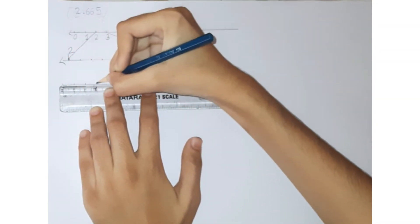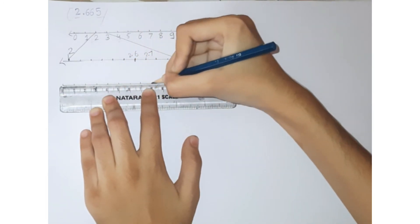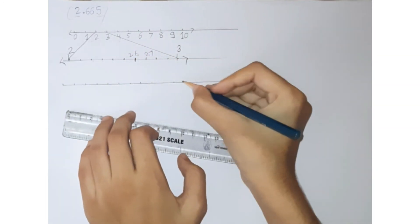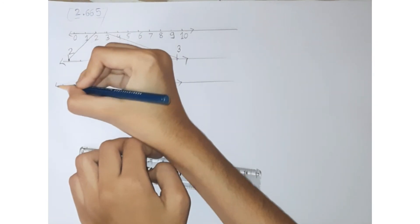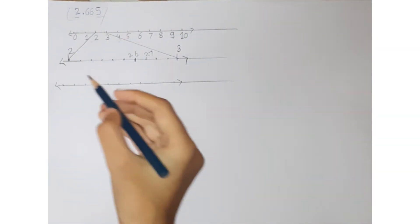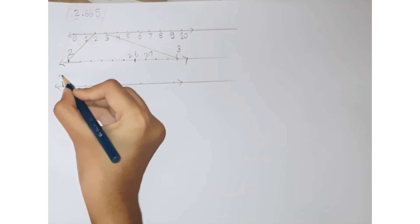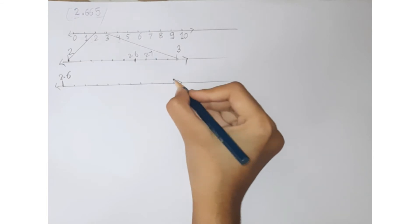0, 1, 2, 3, 4, 5, 6, 7, 8, 9, 10. So when we magnify it what we will get: 2.61, 2.62. Here I will write 2.6 and 2.7.